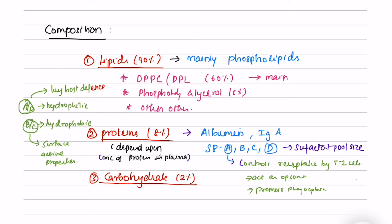Surfactant proteins B and C are hydrophobic and are the most important surface active peptides. Surfactant protein A controls reuptake by type 2 cells, acts as an opsonin, and promotes phagocytosis.